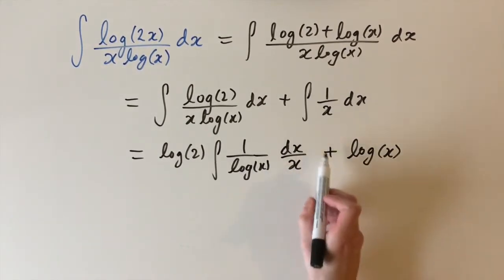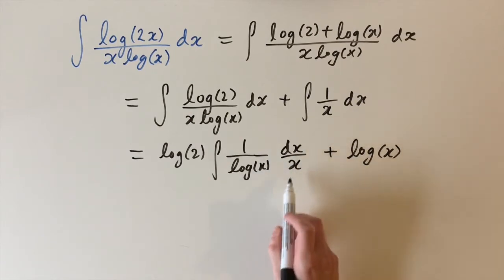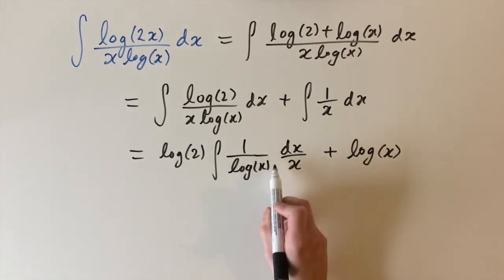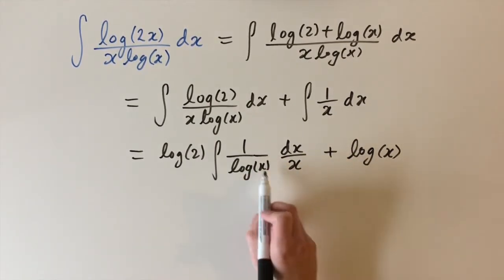So the reason I did this, the reason I grouped dx over x is because we have a logarithm. And we also have the derivative of a logarithm right next to it, which is 1 over x. So this motivates us to use a substitution method.